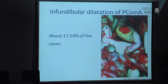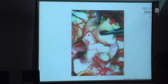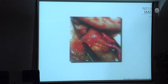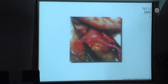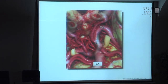A few words about infundibular dilatation of the posterior communicating artery, regarded as a pre-aneurysmal state by some authors. It can be seen in about 17% of cases. In some cases they can truly be a pre-aneurysmal state, as a kind of microaneurysm has started to form. The shape of the infundibular dilatation is very important: if it is triangular, we may assume it will not evolve into an aneurysm. But if we see a more oval or spherical shape, it is very probable that it may evolve in the direction of aneurysm formation. This is a bilateral infundibular dilatation of both posterior communicating arteries.